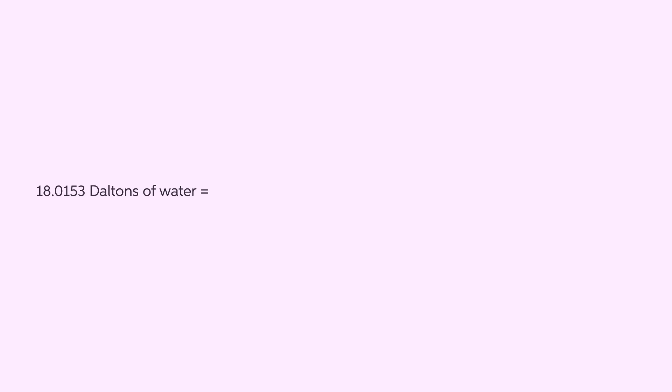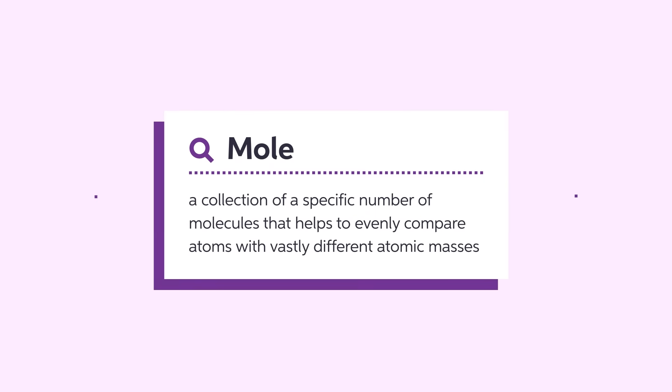Avogadro's number defines a mole of any atom to be a specific number of atoms, so that the average molecular weight in Daltons equals the number of grams that this same number of atoms would weigh. Avogadro's number does this for any atom or molecule of any atomic mass. While there are variations of mass units, Avogadro's number can unify the mass of atoms with differing atomic weights. Put simply, a mole is a collection of a specific number of molecules that helps us evenly compare atoms which have vastly different atomic masses.